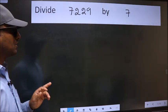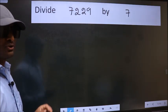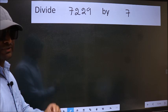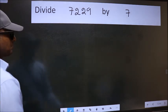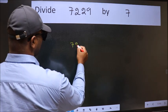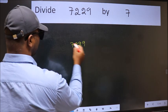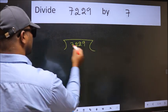Divide 7229 by 7. To do this division, we should frame it in this way: 7229 and 7 here.